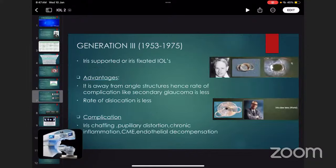Then generation 3rd, from 1953 to 1975, was iris-supported or iris-fixated IOLs by Binkhorst and iris claw lenses by Worst. Advantages: away from angle structures, hence rate of complications like secondary glaucoma is less, rate of dislocation is less. Complications included iris chafing, pupillary distortion, chronic inflammation, cystoid macular edema, and endothelial decompensation.